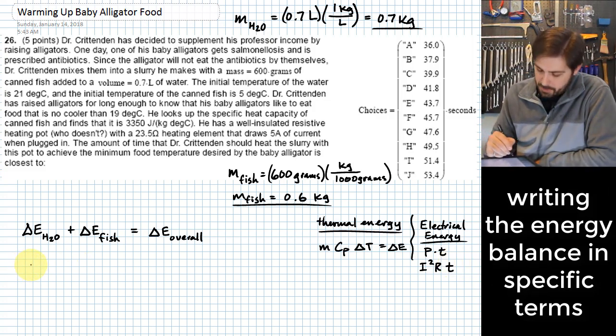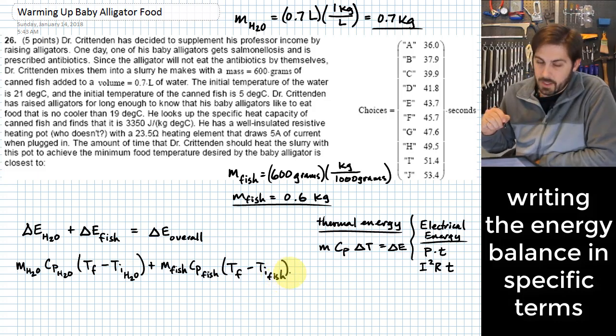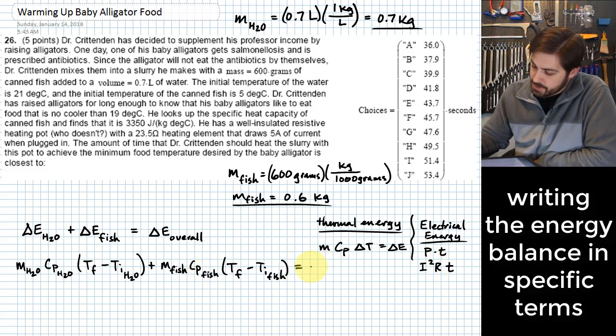Okay, so we're going to now express this specifically for the elements that are part of this system. We have that the mass of the water times the specific heat of the water times delta T of the water, which is just the final temperature, which is the same for both water and fish, minus the initial temperature of the water, plus the mass of the fish times the specific heat of the fish times the temperature change of the fish, which is just the final overall temperature minus the initial temperature of the fish. And this is going to be equal to the overall change in energy which happens as a result of this electrical energy input, I squared R T.